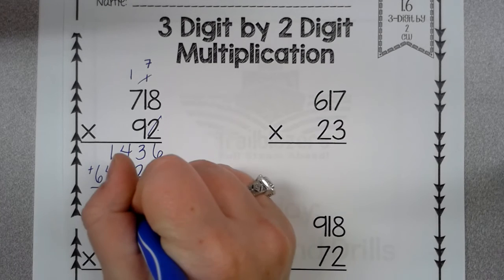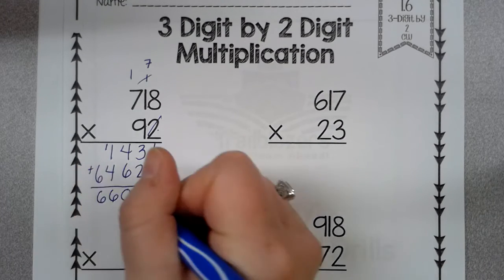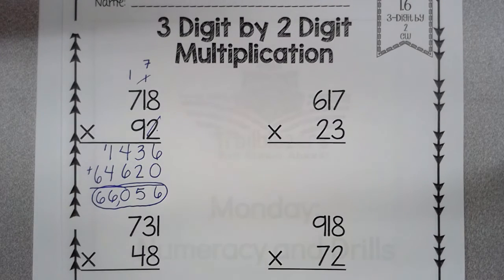So we have 6, 5, 10, 6, 6. Sixty-six thousand fifty-six. Okay, now you're going to do that to the rest of them.